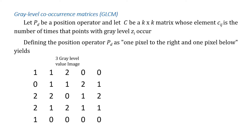In order to understand how to form these matrices, let's start with an example and define a position operator as one pixel to the right and one pixel below. In our example we're using a very simple image of size 5 by 5 that consists of pixel values that only have a limited range of pixel values.